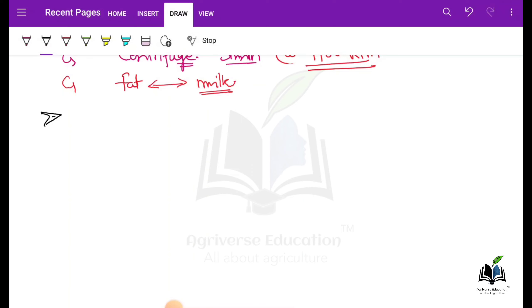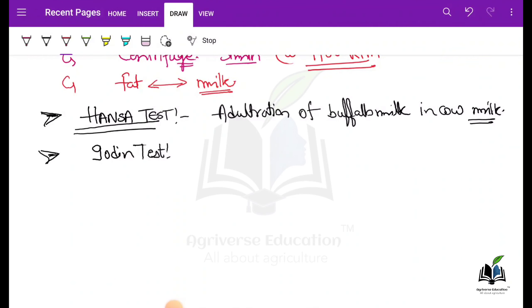The next method is Hansa test. It is important for objective type questions because it is used to detect the adulteration of buffalo milk in cow milk. Another one is iodine test, and iodine test is used to detect the starch content in the milk.